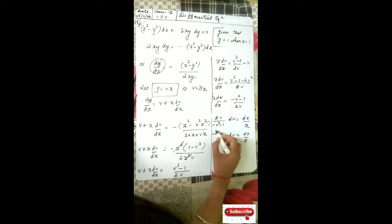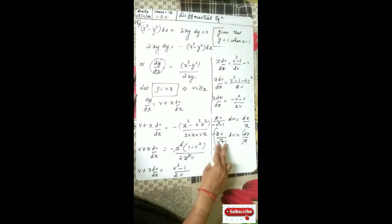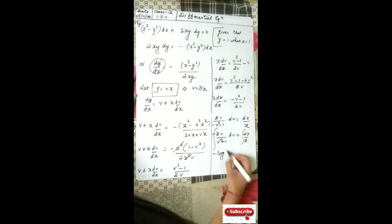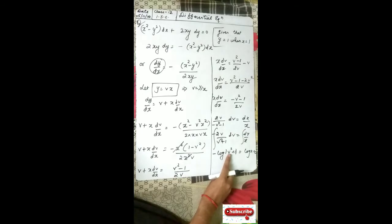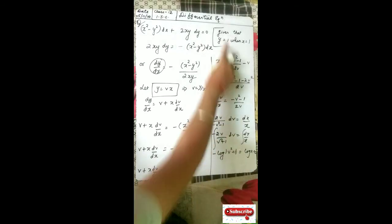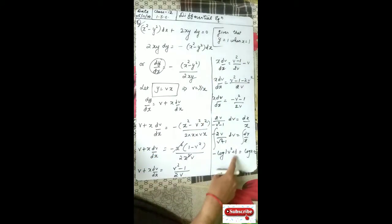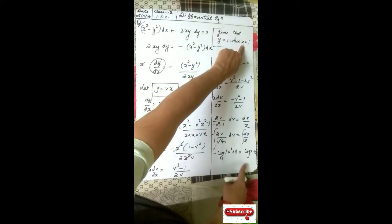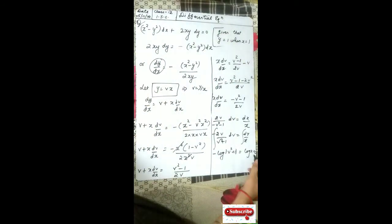Integrate both sides. On the left side, substitute v² plus 1 equal to t, so 2v dv equals dt. After integrating you will get log(v² plus 1). In place of v put y/x, and at the very last place put y equal to 1 and x equal to 1 to get the value of c.